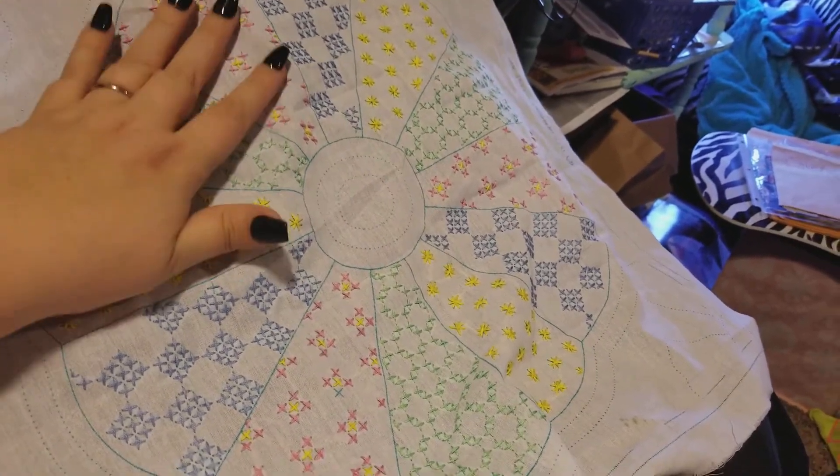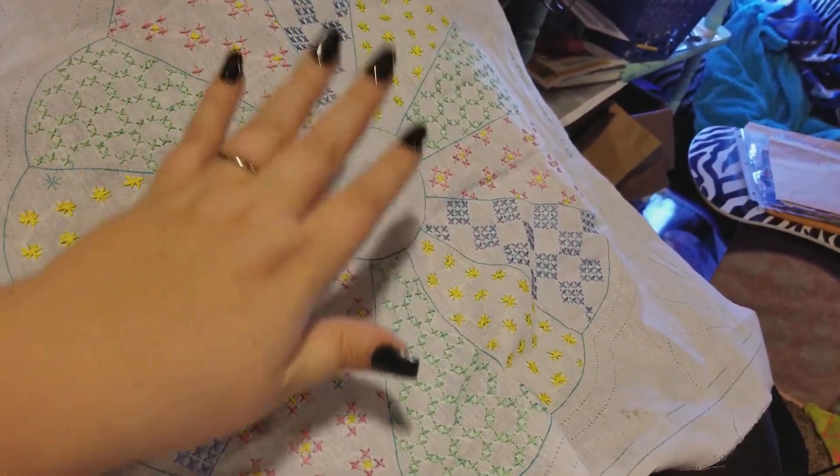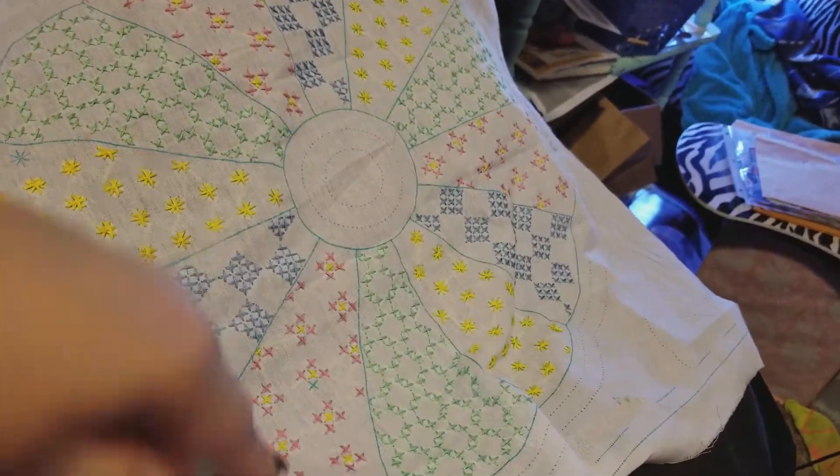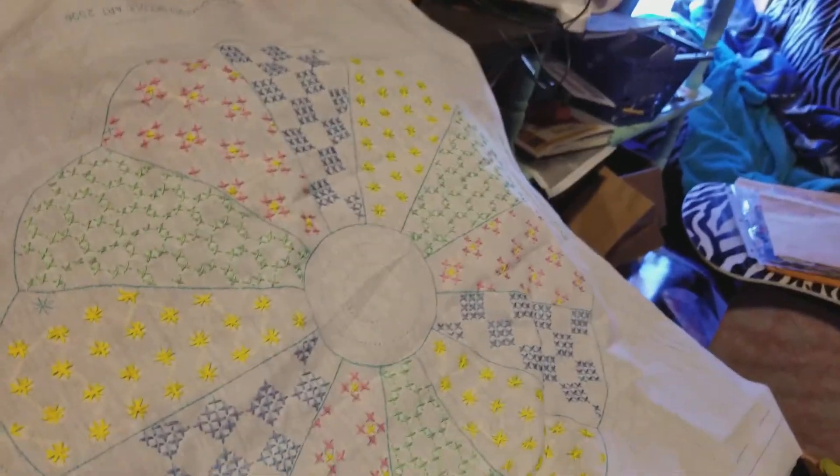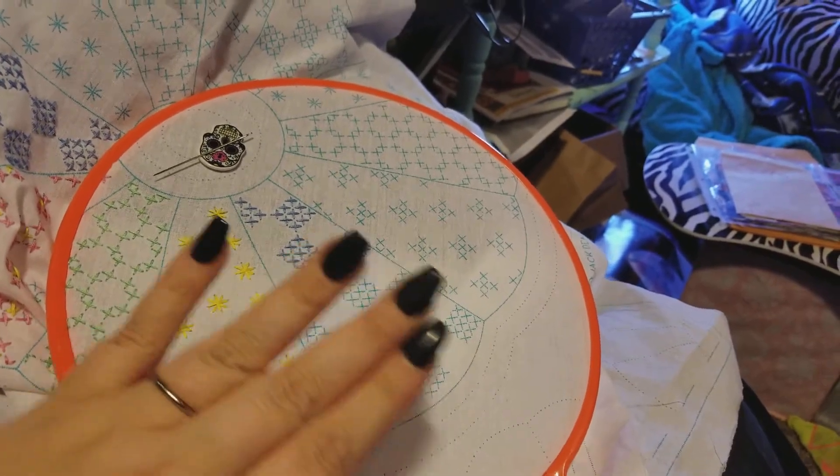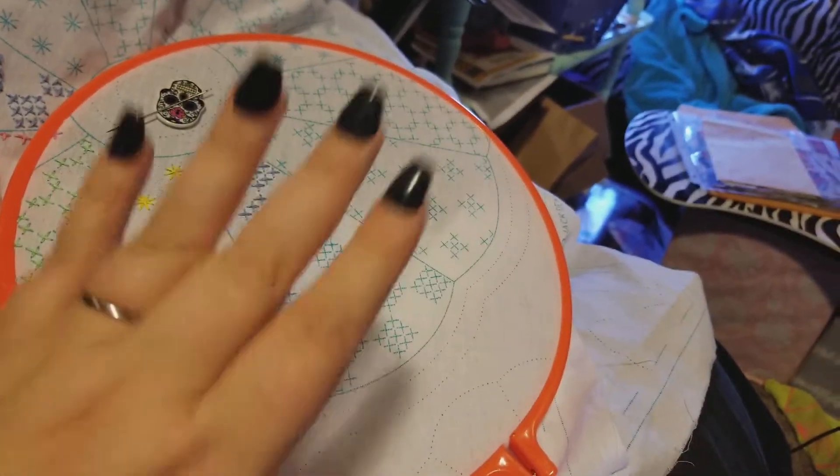She is going to make me a project bag for my cross stitch. It's going to be a zippered bag where I can put my hoop in there and keep everything nice and clean, because y'all know how much I hate having dog hair on anything.